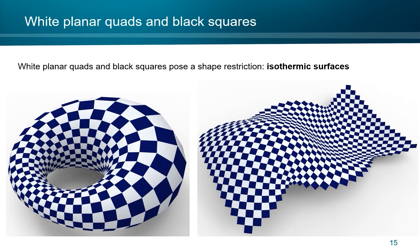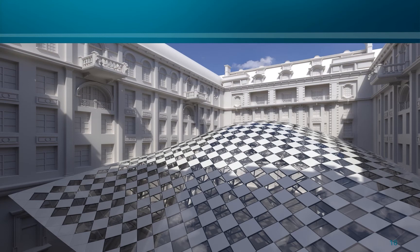This result shows patterns from planar quads: planar white quads and, dark blue here, squares. This is a shape restriction, actually, and represents so-called isothermic surfaces. Here, an architectural situation.